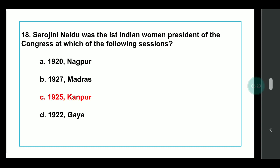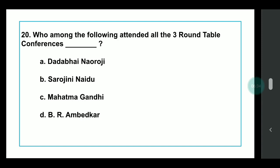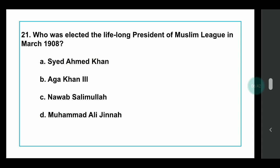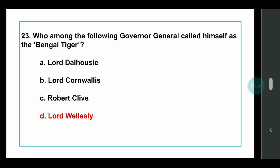Q19: Who presided over the Karachi session of Indian National Congress in 1931? The Karachi session is very famous for a very famous speech of Jawaharlal Nehru, but he was not presiding that session. The session was presided by Sardar Vallabhbhai Patel. Q20: Which Governor General called himself the Bengal Tiger? Answer: Lord Wellesley.